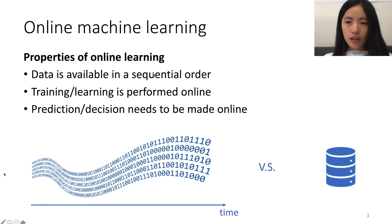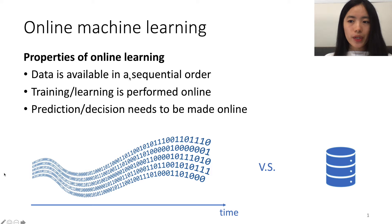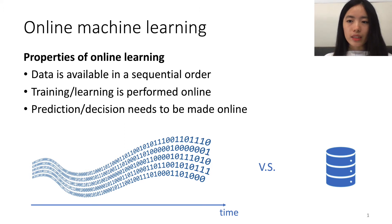data is only available in a sequential order, as opposed to the case in the offline learning or batch learning setting, where people usually assume there are datasets collected upfront. With this access to a data stream, the training and learning is performed online as we have more and more data.